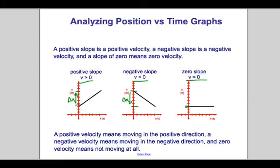So a positive velocity means an object is moving in the positive direction, a negative velocity means you're moving in the negative direction, and a zero velocity means there's no displacement whatsoever.